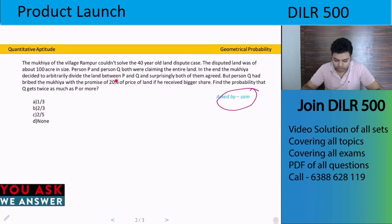But person Q had bribed the mukhiya with the promise of 20% of price of land if he received bigger share. Find the probability that Q gets twice as much as P or more. So only this line is important, and the rest is just story.